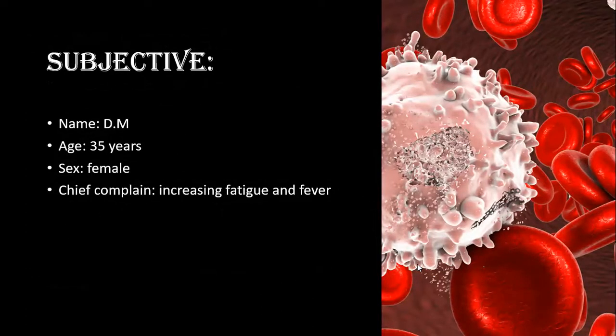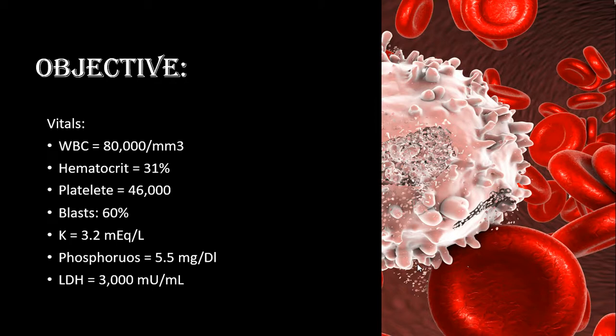SOAP Note — Subjective: Patient name, age 35 years, sex female. Chief complaints: increasing fatigue and fever. Objective vitals: WBC 80,000, hematocrit 31%, platelets 46,000, blasts 60%, potassium 3.2, phosphorus 5.5, LDH 3000.